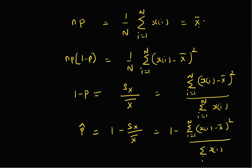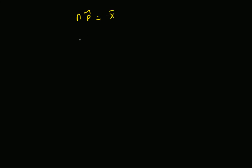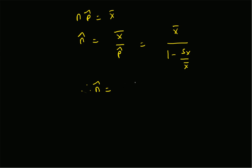From the first equation, n*p-hat equals x-bar, so n-hat equals x-bar divided by p-hat, which can also be written as x-bar divided by (1 - s_x/x-bar). Therefore, n-hat equals x-bar squared divided by (x-bar minus s_x).